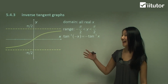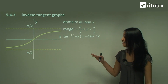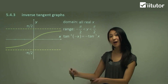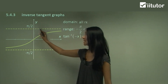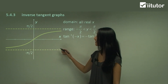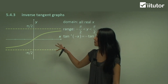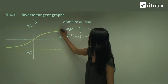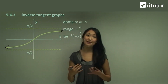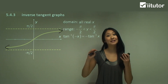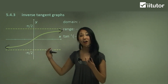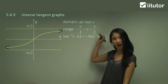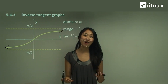Let's revise our inverse tangent graphs. Because the asymptotes for the normal tangent were vertical, when we flip it for our inverse, the asymptotes occur at pi on 2 and negative pi on 2, and our curve also reverses. In your exam, we label this with arrows because it's quite different from inverse sine and inverse cosine, where the graph stops at specific values. Because the domain is all real x, this curve keeps going forever, and that's why we need arrows.